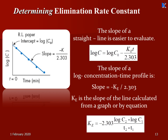From the straight line plot of log C versus time, the slope is −Ke / 2.303, from which it is possible to determine the elimination rate constant. That is: Ke = −2.303 × (log C2 − log C1) / (t2 − t1). This is one approach by which we can determine the elimination rate constant — the first secondary pharmacokinetic parameter.